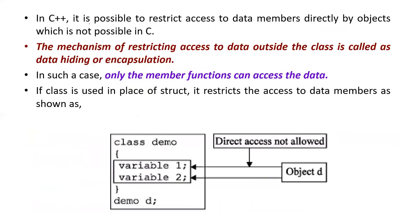In C++, it is possible to restrict access to data members directly by objects. In the previous slide there was no such restriction, but in C++ it is restricted. The mechanism of restricting access to data outside the class is called data hiding or encapsulation.